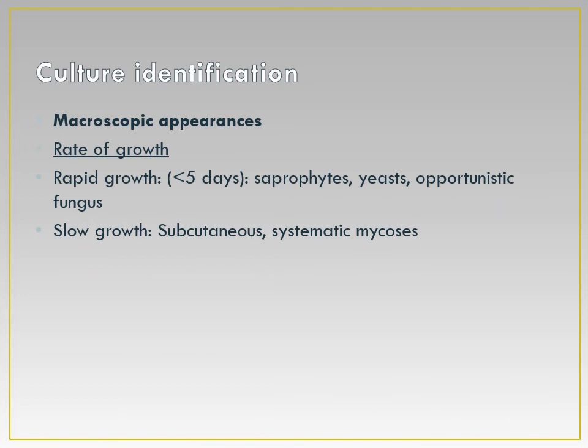Correct identification of the fungus is based on macroscopic and microscopic appearance of colonies grown in culture. For macroscopic appearance, the rate of growth is observed. Rapid growers grow in less than five days and are seen in saprophytes, yeasts, and agents of opportunistic mycoses. Slow growers take one to four weeks and include dermatophytes and agents of subcutaneous and systemic mycoses.